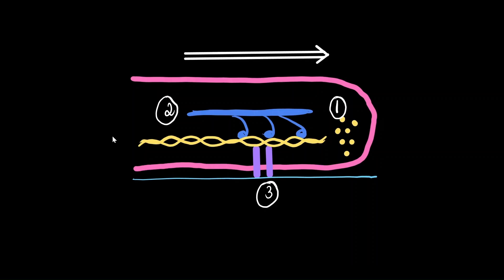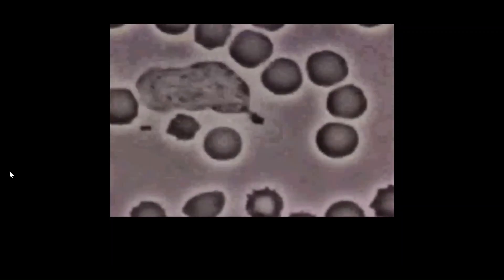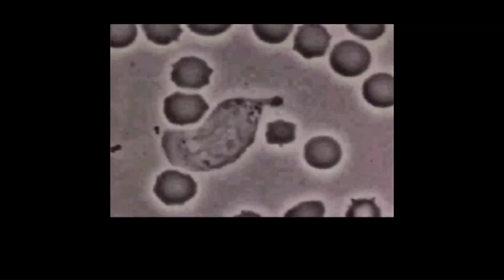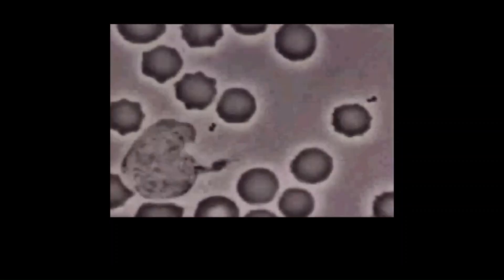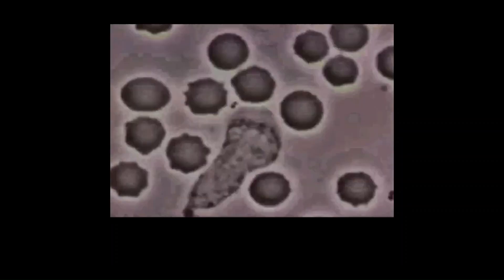Amoeboid movement is also seen in white blood cells like macrophages and neutrophils. Watch this macrophage chasing a bacterium — this is how immune cells function to keep us safe from pathogens.